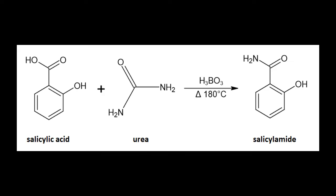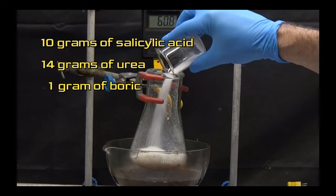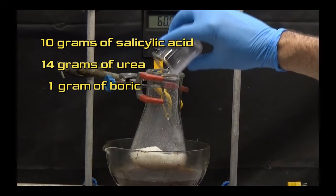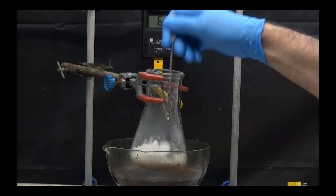In the second step, we obtain salicylamide using the salicylic acid obtained, urea and boric acid as a catalyst. To proceed, we will put 10g of salicylic acid, 14g of urea and 1g of boric acid in a 250ml flask.